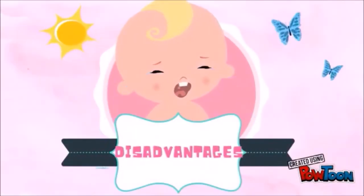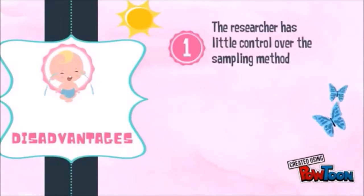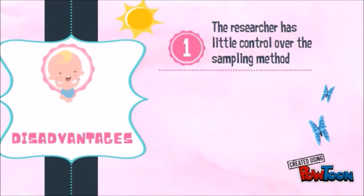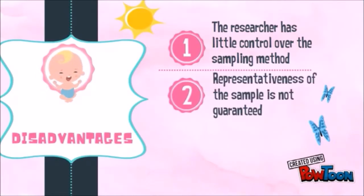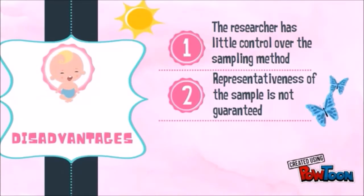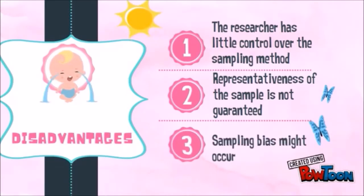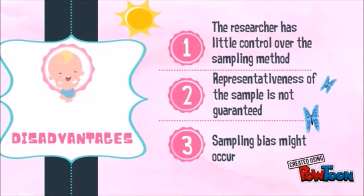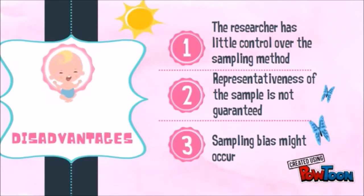Disadvantages: First, the researcher has little control over the sampling method, as the subjects obtained rely mainly on the previous subject. Second, representativeness of the sample is not guaranteed — the researcher has no idea of the true distribution of the population. Third, sampling bias is also a concern, as subjects tend to nominate people they know well, making it highly possible that subjects share the same traits and characteristics.